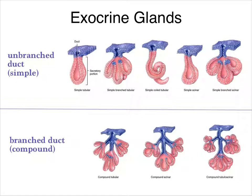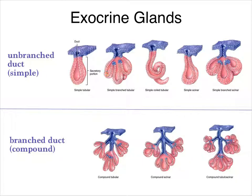Here we see a simple tubular gland — it comes down in a lobe-like shape and one duct leads to the surface. Here we have a simple branched tubular gland. These are tubes with finger-like projections, and multiple projections join together, but the branching occurs before you get to the duct, labeled here in blue. So it is simple and branched.